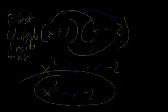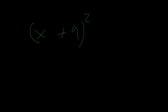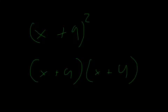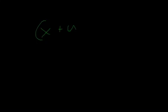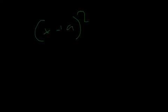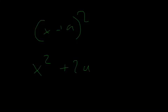Remember that when you have a question like (x+9)², it's just asking you to do (x+9)(x+9). If you expand something in the form (x+a)², you know the answer will be in the form x² + 2ax + a². So for (x+9)², the answer is x² + 18x + 81. This is quite useful to know.